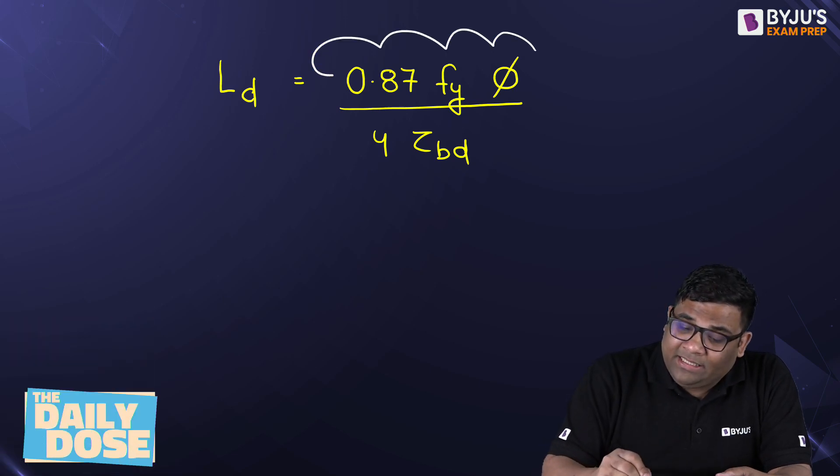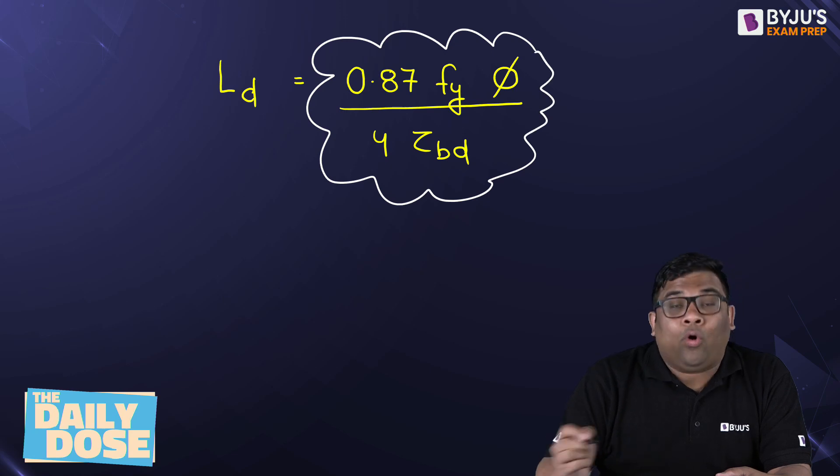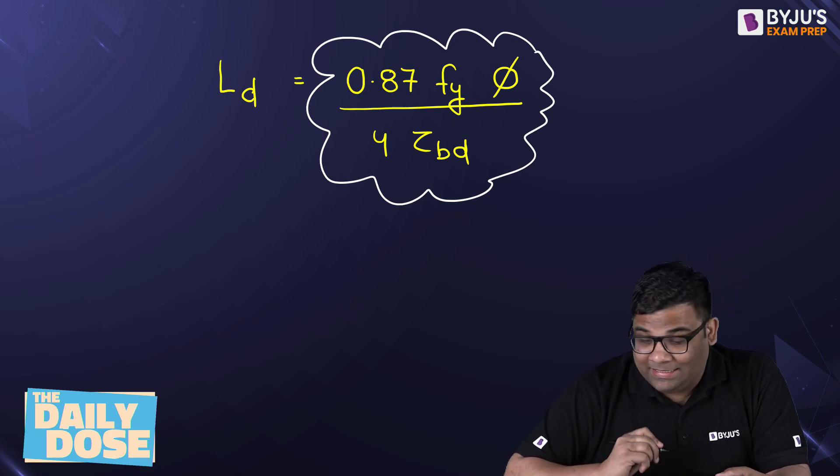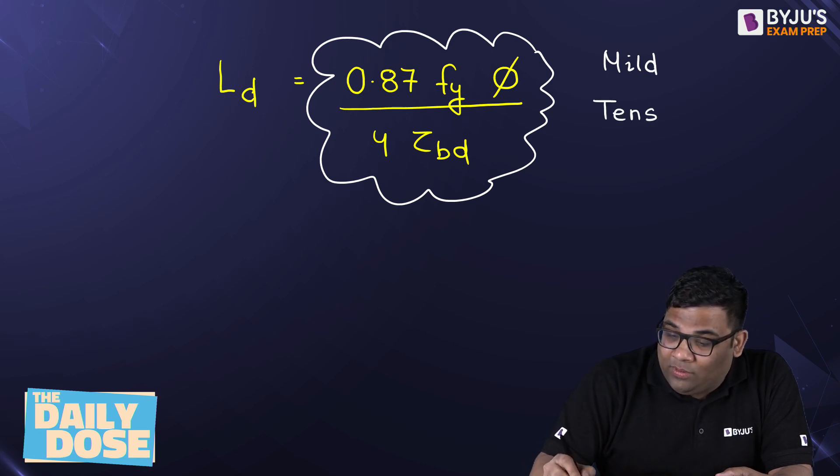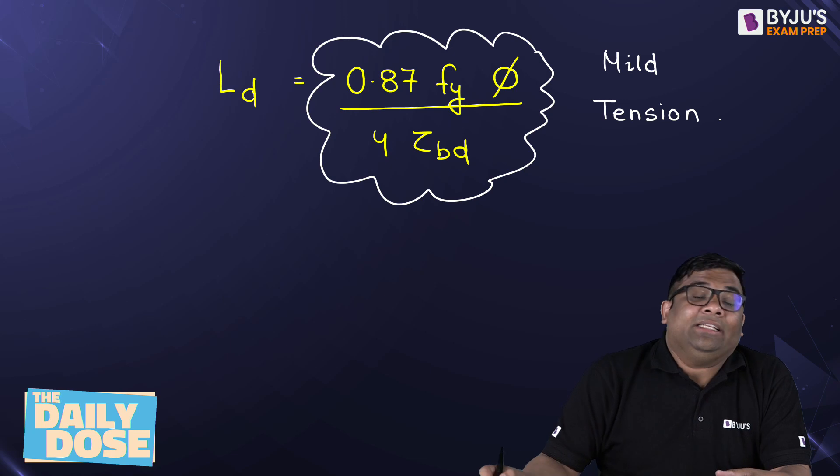Now, the thing is that this equation is not valid for all the types of bar. This is only valid for mild steel in tension. It is only valid for mild steel in tension.